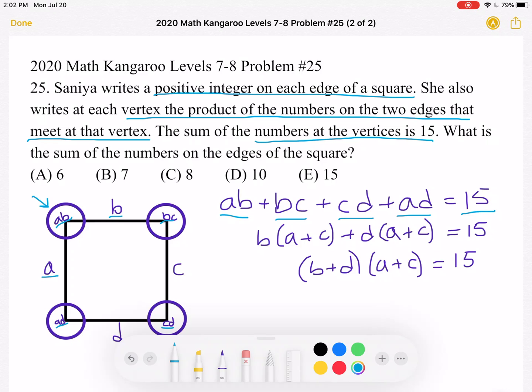And we know that we're looking for the sum of the numbers on the edges of the square. So keep in mind, we're looking for the sum. That means we don't really care what A is or what B is. We just want the sum of A plus B plus C plus D. So in order to find that sum, we should factor the terms in order to get A plus B plus C plus D.